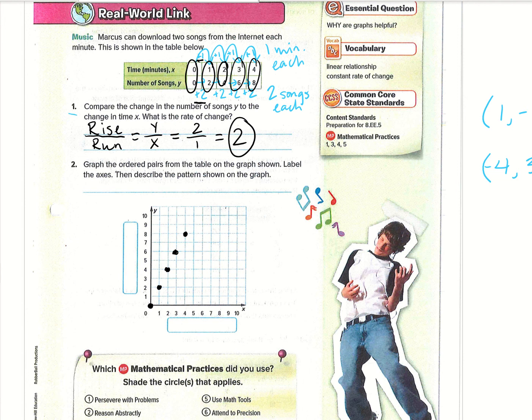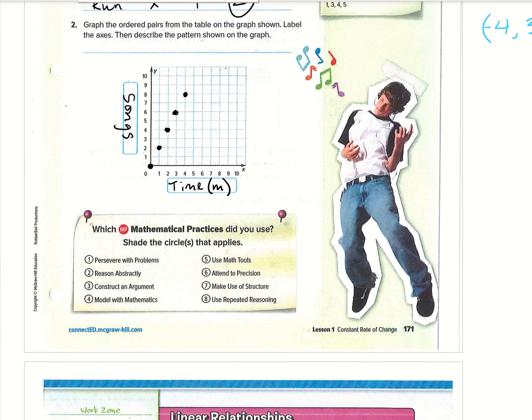It also tells us to label the axes. The x-axis is going to be whatever the x value is. So that will be our time in minutes. And then our y-axis is going to be the number of songs. So I'm just going to put songs. That's really it for this graph, and we can move on at this point.